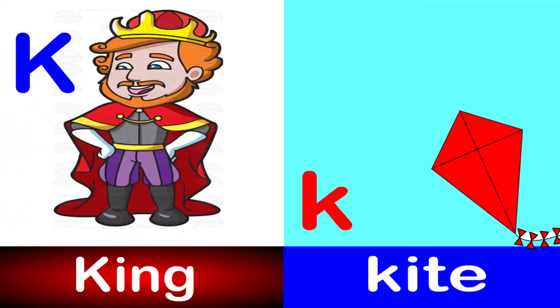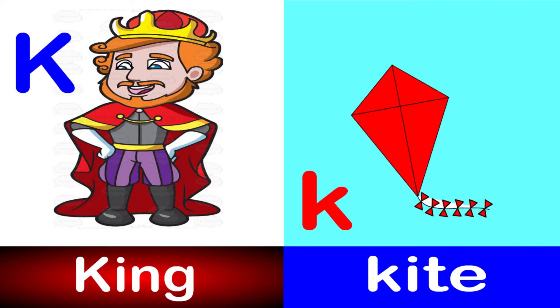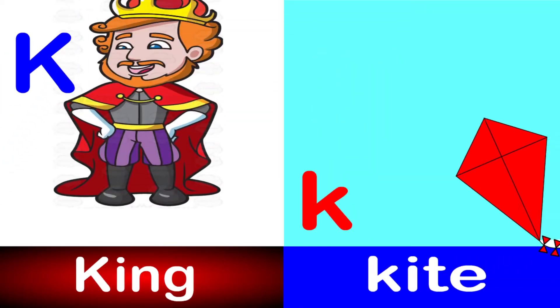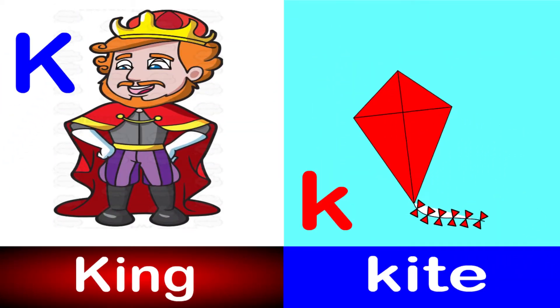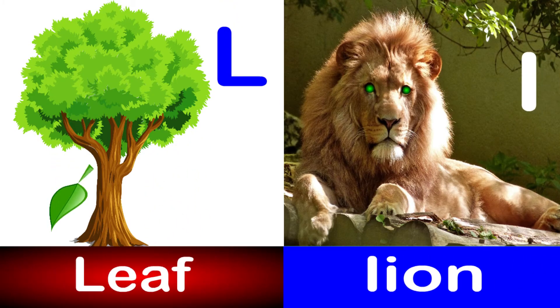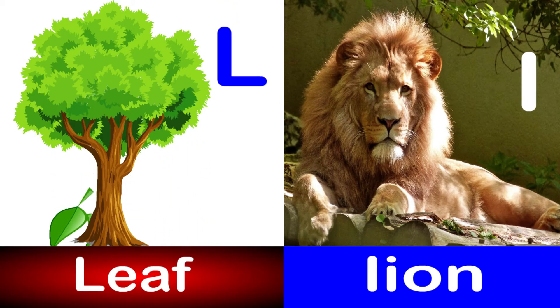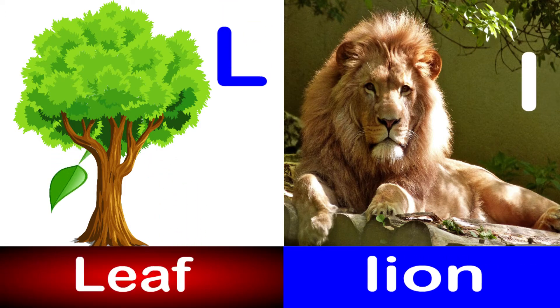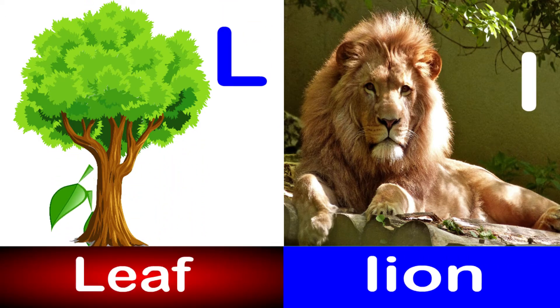K for king, K for kite. Tick tick tick, tick a tick a tick. L for leaf, L for lion. Tick tick tick, tick a tick a tick.